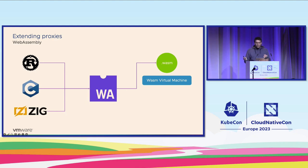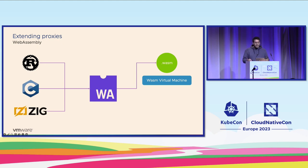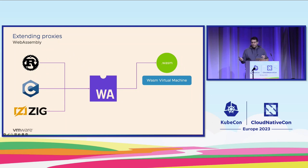So we have this binary that runs in a sandbox — it's safe and it's universal, so we can run it anywhere. But we need something to run it, and that is the virtual machine. We need a WebAssembly virtual machine that will interpret this WebAssembly and run it on our machine.